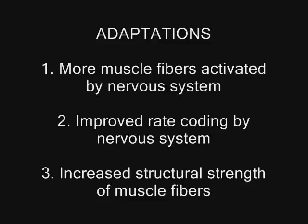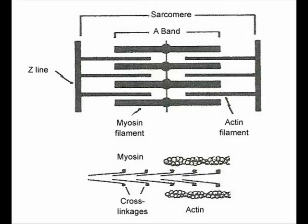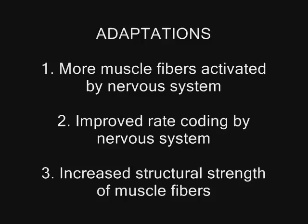The third adaptation is an increase in the structural strength of muscle fibers. When the signals activate the fibers, they generate more tension. Muscle tension comes from the interlocking protein filaments within each fiber. When you strength train and your muscles get bigger, it's partially because more protein filaments get packed into the muscle fibers, so the muscle becomes structurally stronger. So you have structural adaptation and nervous system adaptation that increase neuromuscular strength, allowing the muscles to generate more tension.